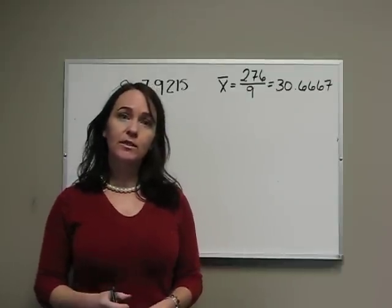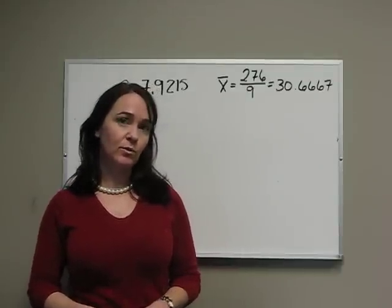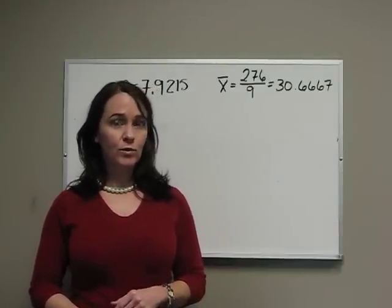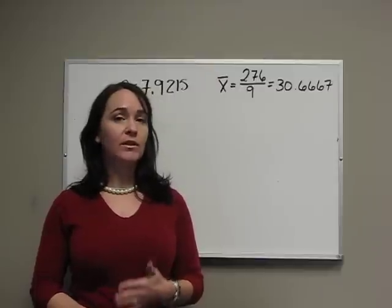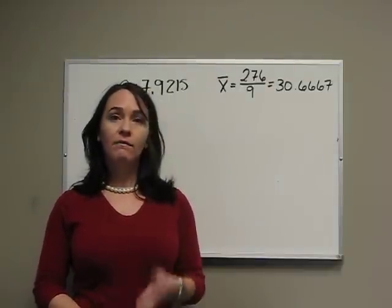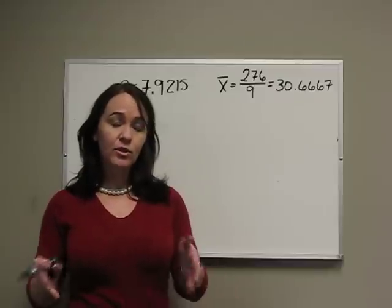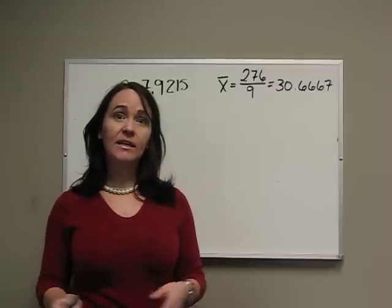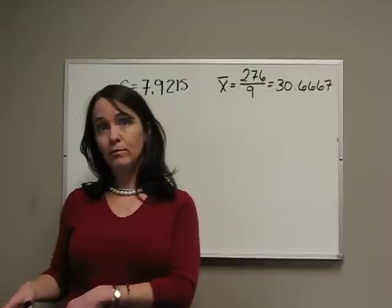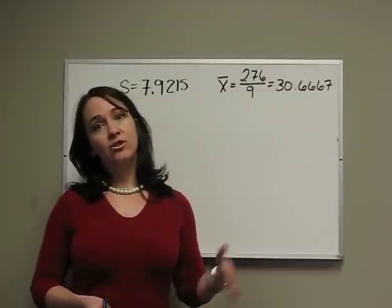To interpret this, we're going to use the three standard deviation rule. This rule says almost all of your data will be within three standard deviations of the mean. What that means is you should never get a piece of data that is three standard deviations below your mean or three standard deviations above your mean.